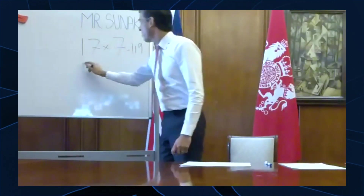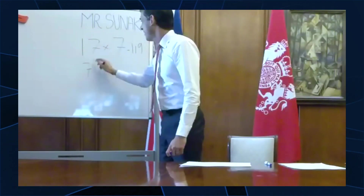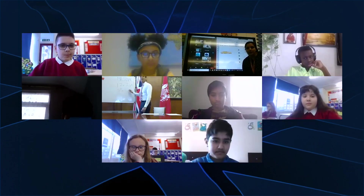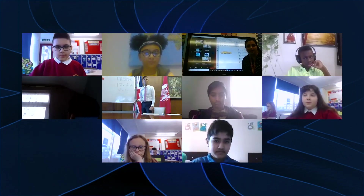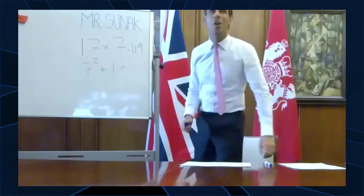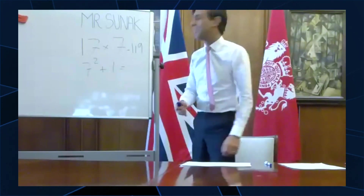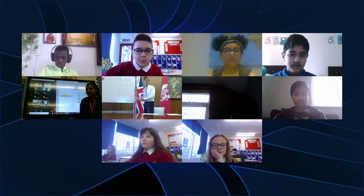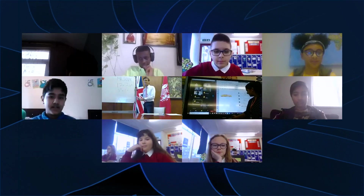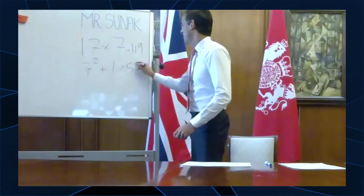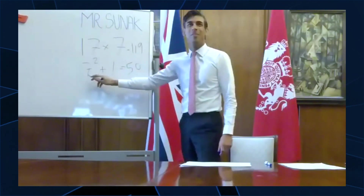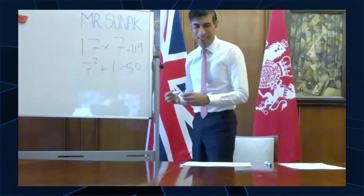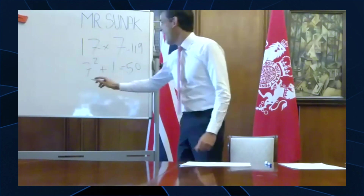We've got 7 squared plus 1. Who have we got? Omi. Hi, I'm Rishi. Have you got an answer for me? 50. Well done, that is spot on. 7 times 7 is 49 plus 1.